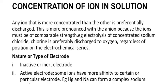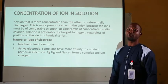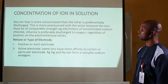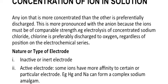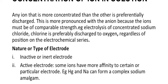Regarding concentration of ions: any ion that is more concentrated than another is preferably discharged. This is more pronounced with anions because they are of relatively close strength, unlike cations which have a wide range of strength. In the electrolysis of concentrated sodium chloride, chlorine is preferably discharged over oxygen regardless of the electrochemical series position, because chloride ions are more concentrated in that solution. Regarding the nature or type of electrode: there is the inactive or inert electrode, which does not participate during electrolysis, and the active electrode. Some ions have more affinity for certain electrodes — for example, mercury and sodium can form a complex called sodium amalgam.